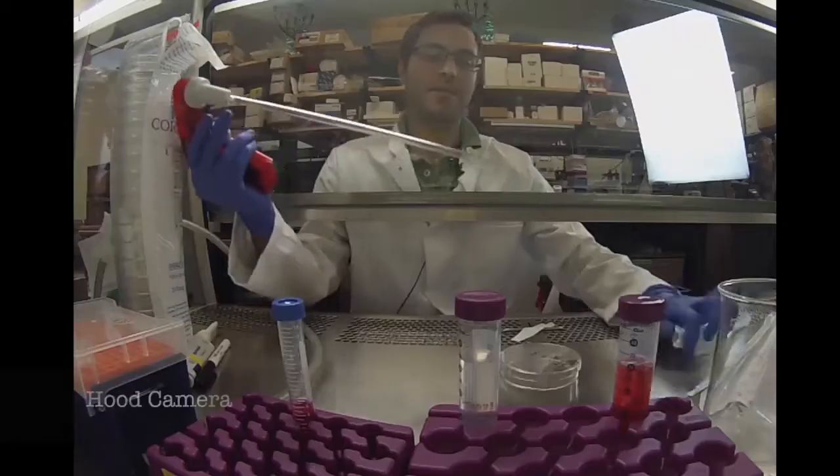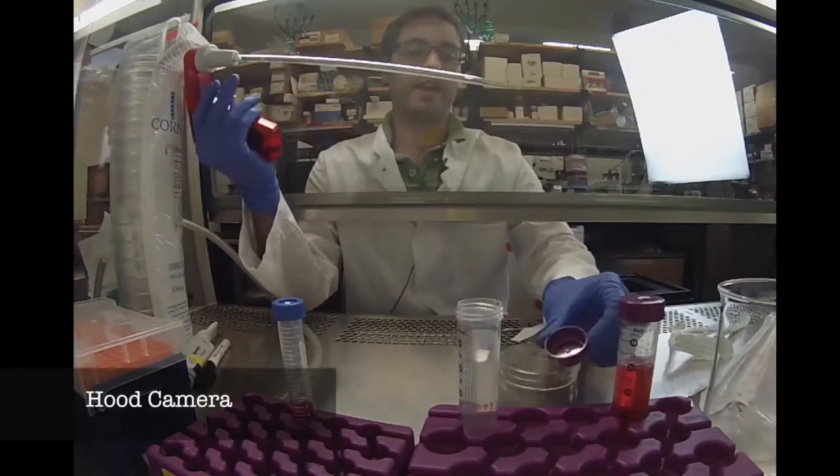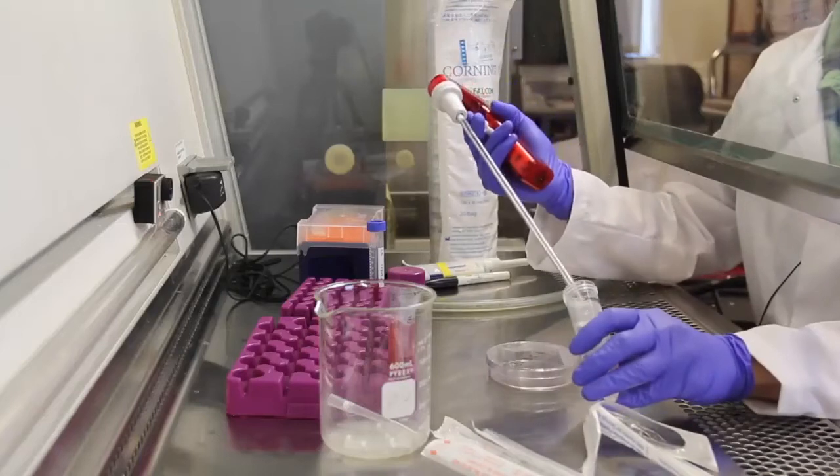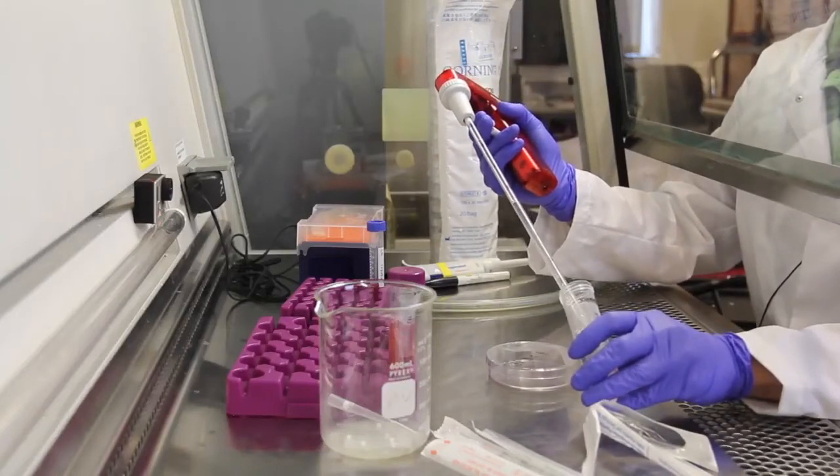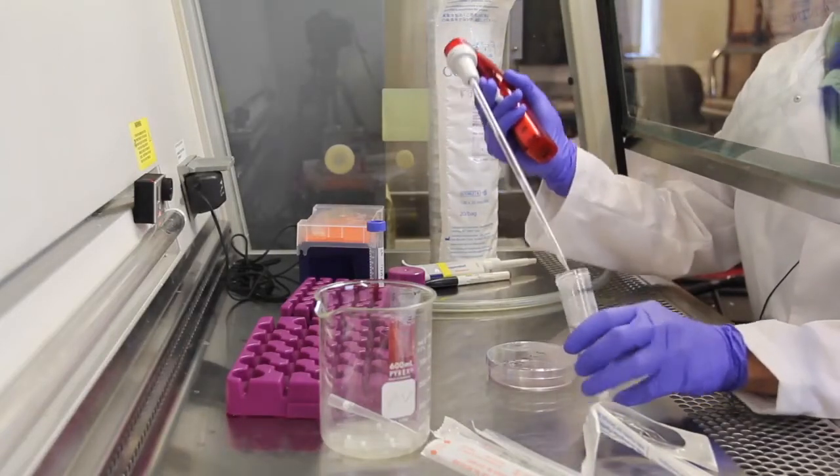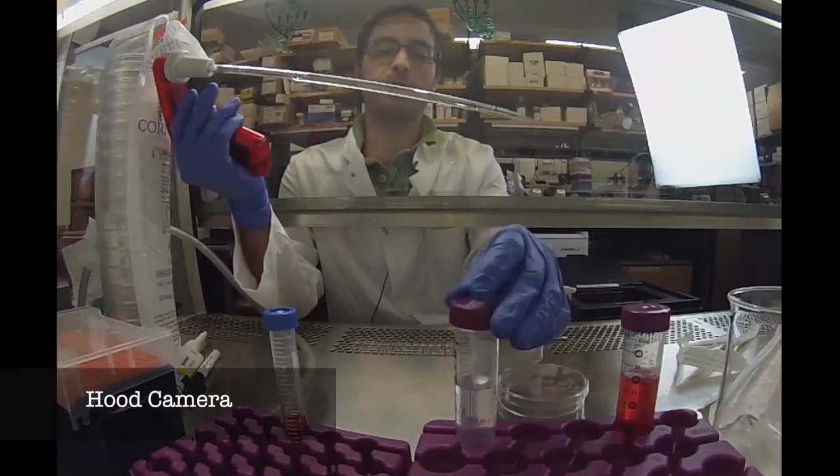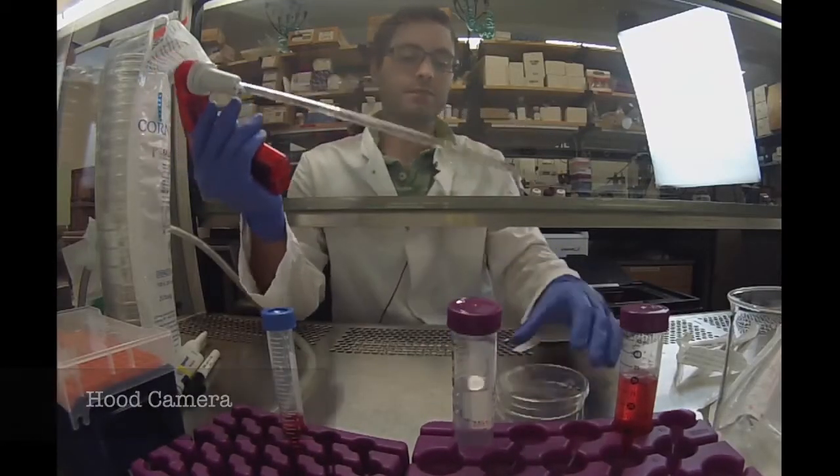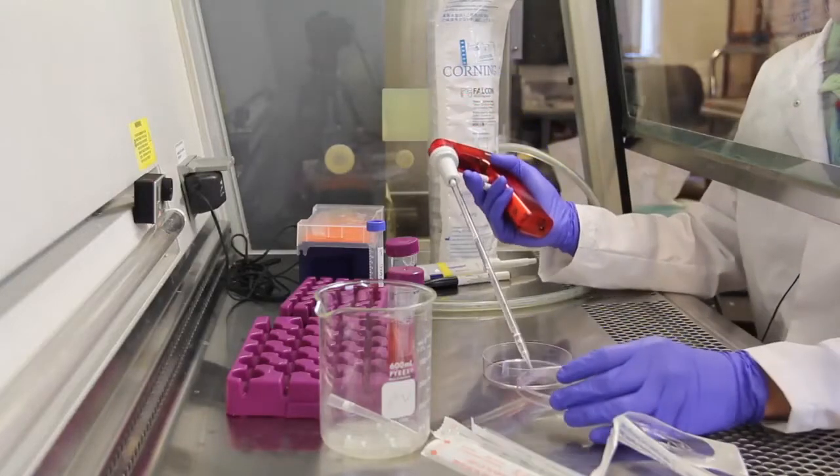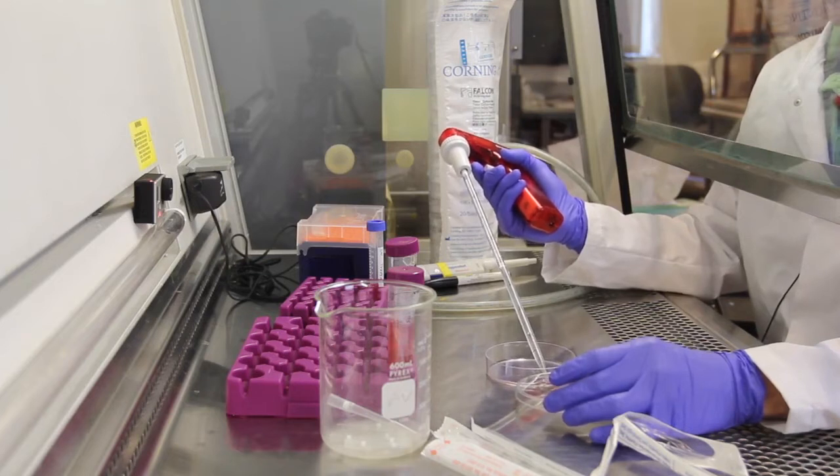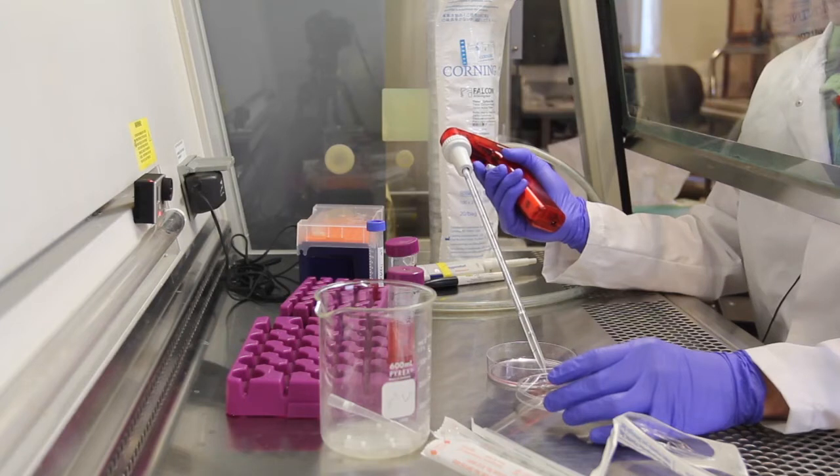I take this five milliliter pipette, open the cap completely, flip it upside down to prevent contamination, take the tube, take five milliliters of PBS, immediately reseal the tube to prevent contamination and carefully pipette it into the plate. I pipette down slowly to prevent any cells from lifting off the bottom of the plate.